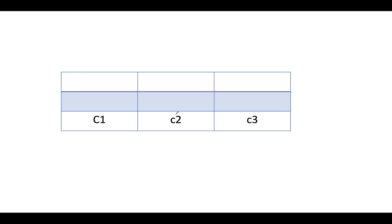We do this for the entire grid. Once we reach the final row and have calculated the cost for reaching each cell in it, we iterate through that final row, identify the minimum value, and that becomes the final answer.